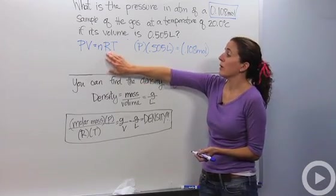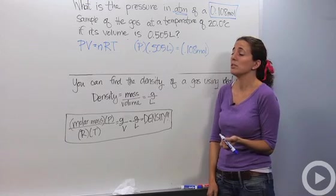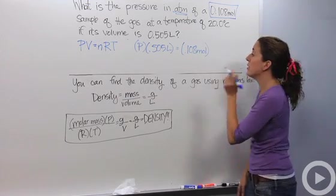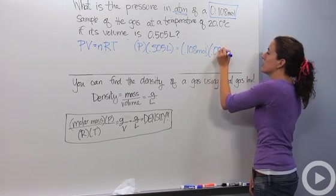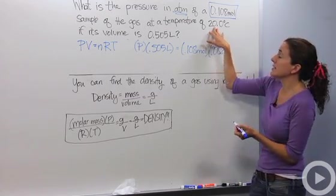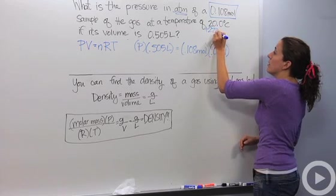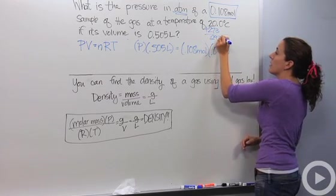And the R that we're going to use, we have three R's to choose from. We're going to use R dealing with atmospheres. So pressure is wanted in the unit of atmospheres. So our R in the unit of atmospheres is 0.0821. And then our temperature in this case is 20 degrees Celsius. Don't forget we always want things in Kelvin. So we're going to add 273 to make it 293 Kelvin.